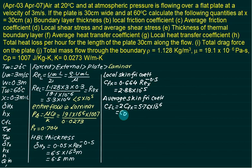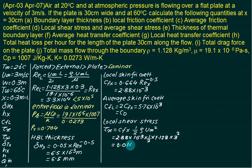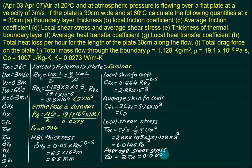The local shear stress is τ_x = ½·ρ·v²·C_fx. With ρ = 1.128 kg/m³ and velocity = 3 m/s, we get τ_x = 0.0146 Pa. Similarly, the average wall shear stress is τ_wall = 2·τ_x = 0.0292 Pa.